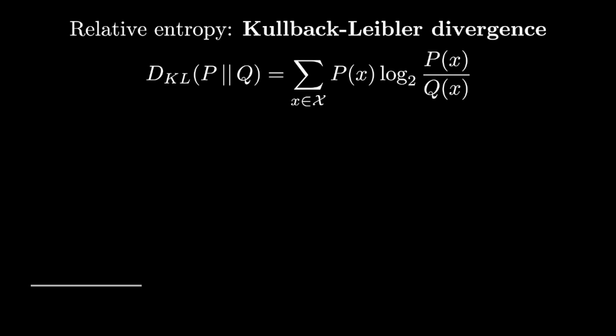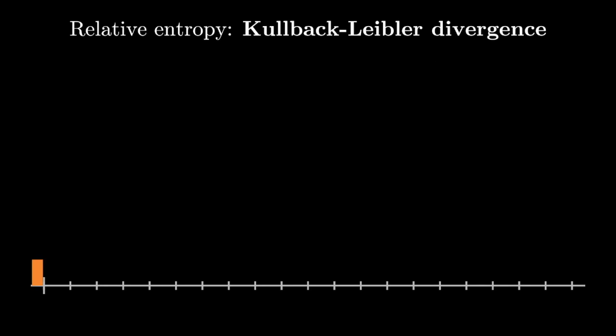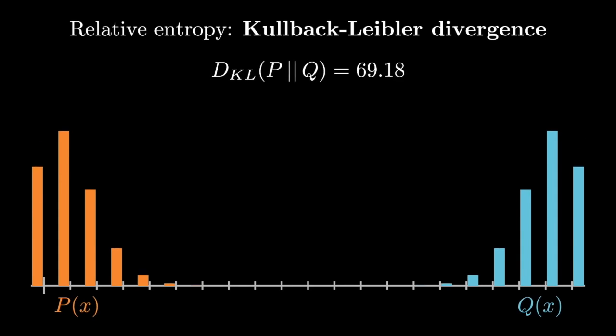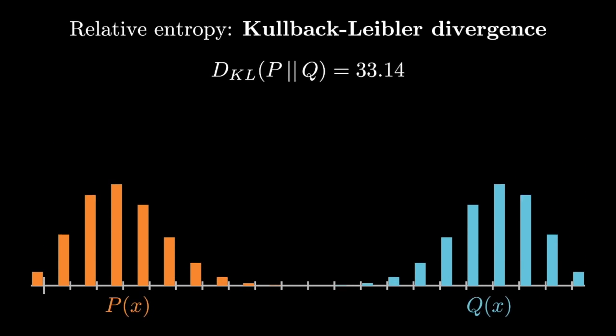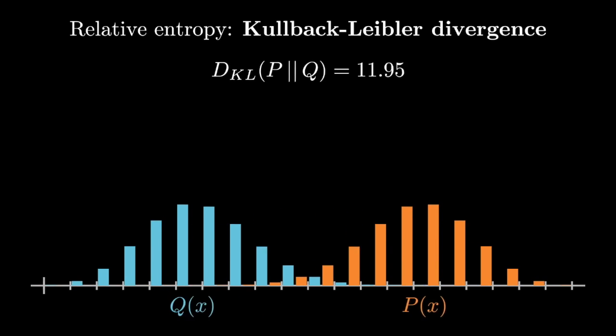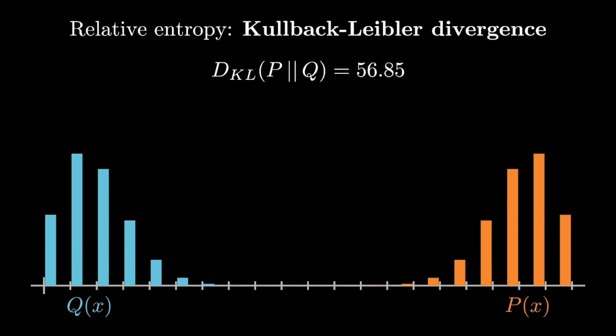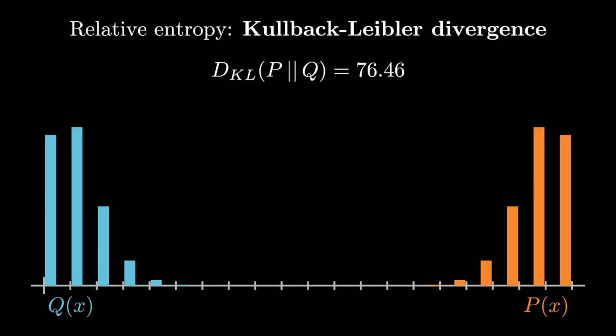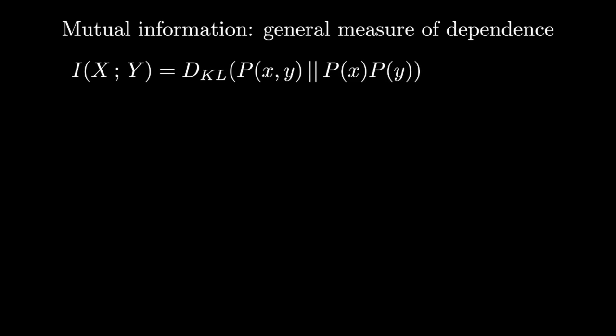Here I'm showing a visualization of the KL divergence between two different binomial distributions as their parameters change. You can see that the KL divergence is smaller when there's a lot of overlap between the two distributions.